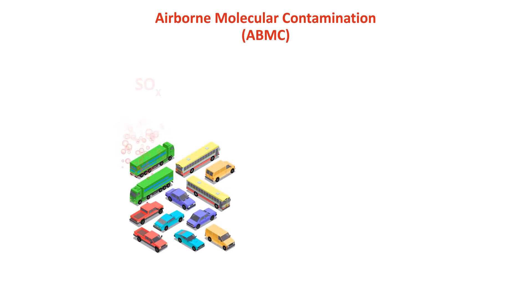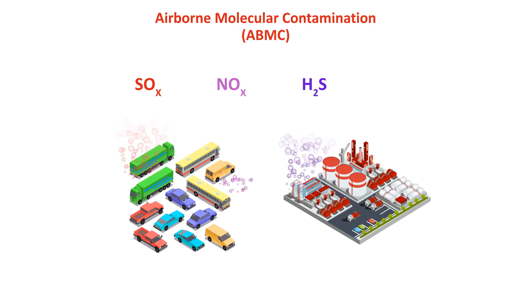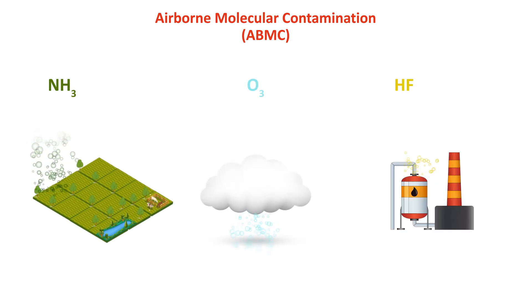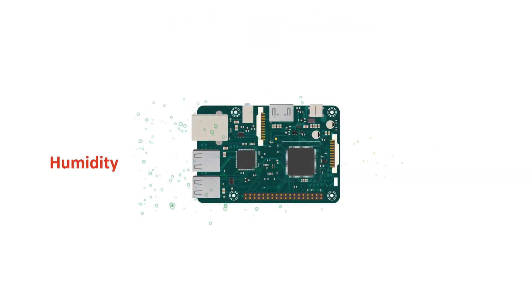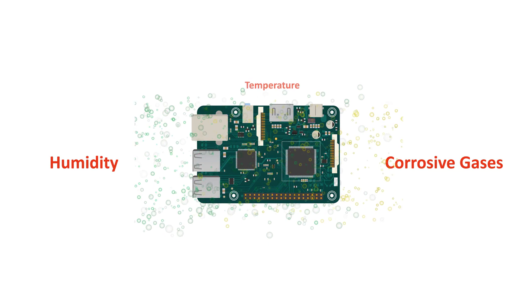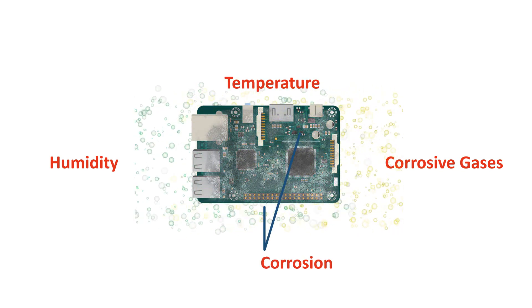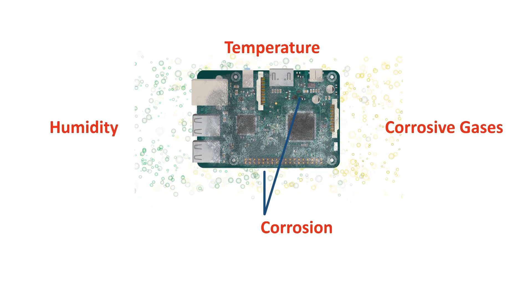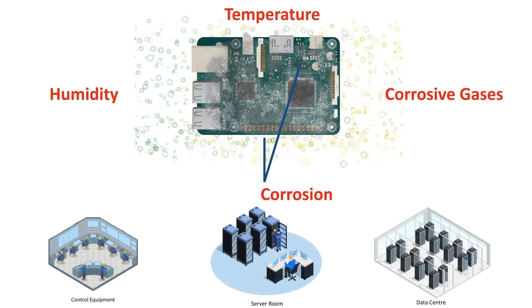Airborne molecular contamination, or AMC, is mainly due to the vapors of contaminant gases like compounds of sulfur, SOx, H2S, oxides of nitrogen, NOx, chlorine compounds, ammonia, NH3, O3, HF and volatile organic compounds, VOCs. High relative humidity in combination with corrosive gases corrodes electronic circuits and other control equipment, and hence adversely affects the operation, reliability and longevity of sensitive automated process control equipment, server rooms and data centers of various industries.